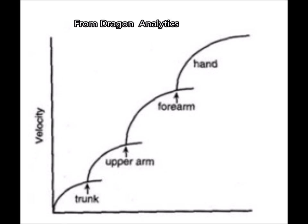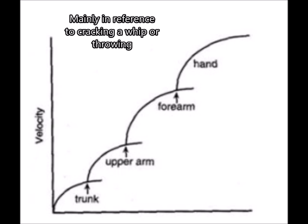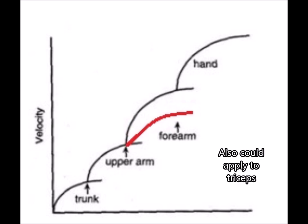According to Dragon Analytics, the effective movement of the paddle depends upon the sequential movement of body parts, from trunk to upper arm to forearm to hand. If you don't use your biceps, this means you don't move your forearm, which will result in a slower movement of your hand.